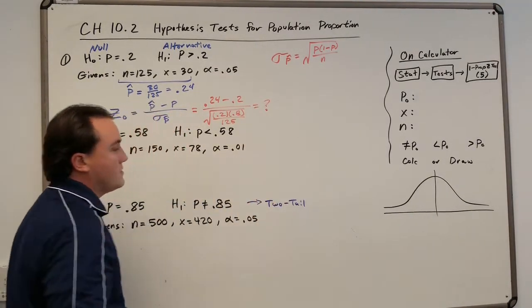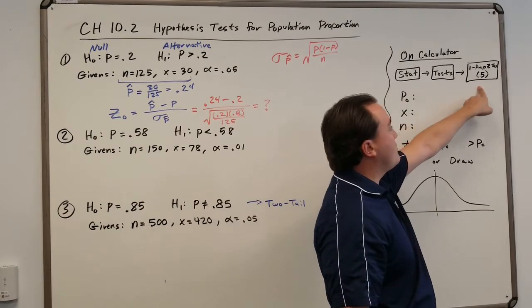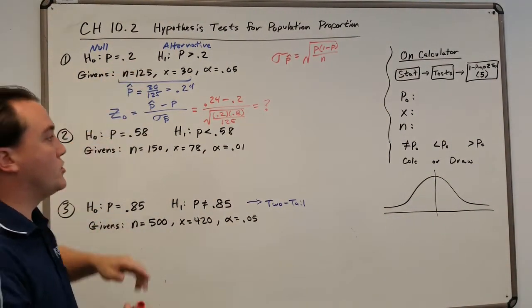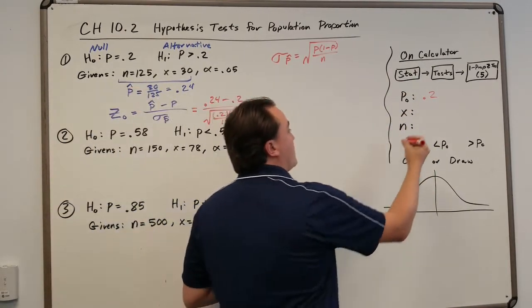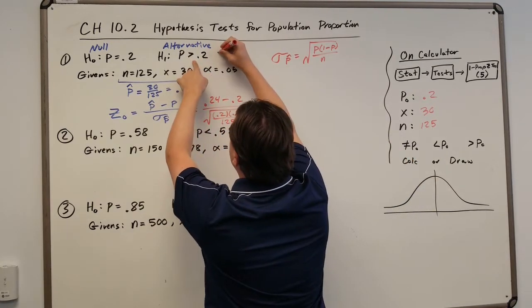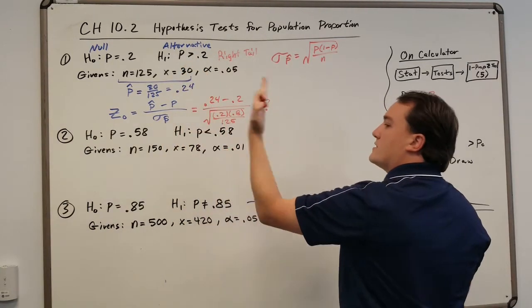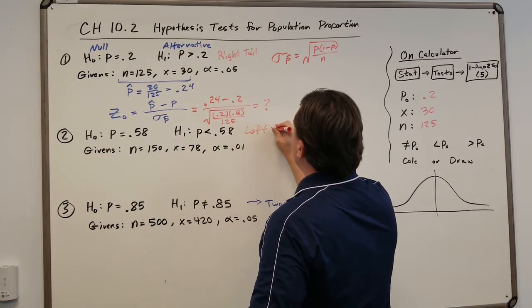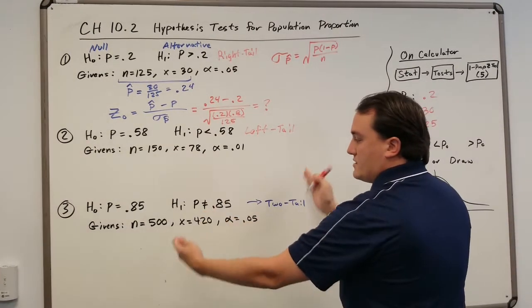But let's just do it with the calculator. So if you're going to do this with the calculator, you type in stat tests, one proportion z test, or you can click the number 5, right? And then you type in the values that you're given. So you got p-naught is 0.2, x is 30, and 125 for n. This is greater than, which means a right tail. So if it's greater than, you're looking this way, that's to the right, the right tail. If it's less than, we're going to be using a left tail test. And then this is two tail tests because we're just looking to see if it's outside of that range.